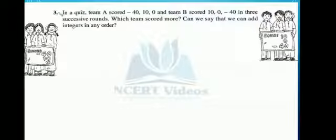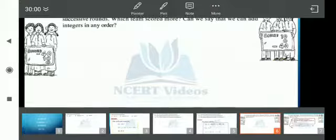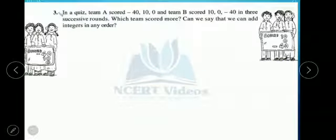Question number three is asking, in a quiz, team A scored minus 40, 10, 0 and team B scored 10, 0, minus 40 in three successive rounds.